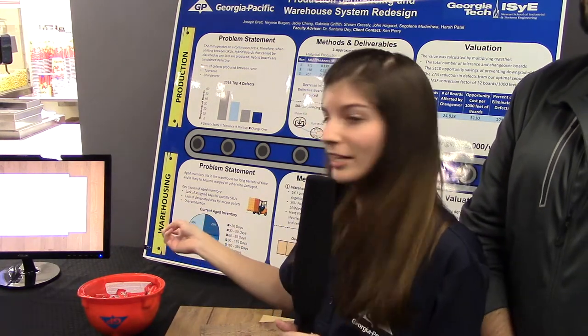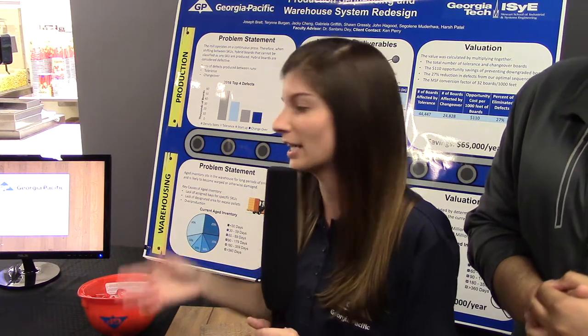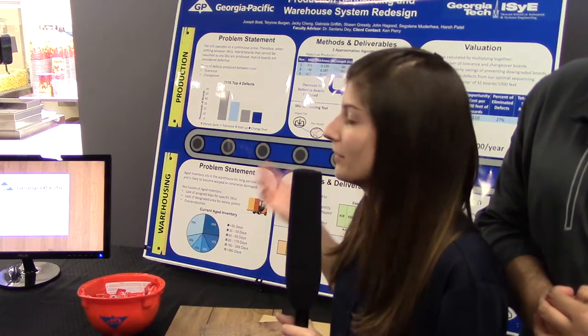We created a tool — which you may be able to see on the monitor — that allows the production scheduler to import weekly orders and receive the optimal SKU sequence, which they can then export to Excel. Running this over six months of data, we arrived at a 27% reduction in defective boards produced, which translates to $65,000 in savings for Georgia Pacific.